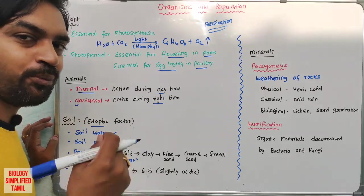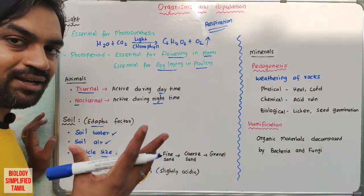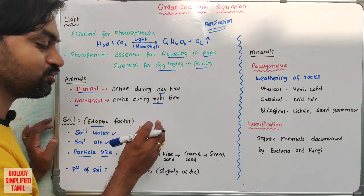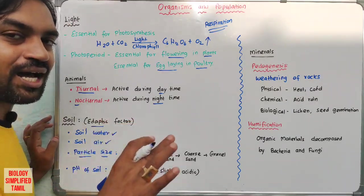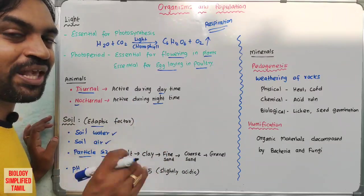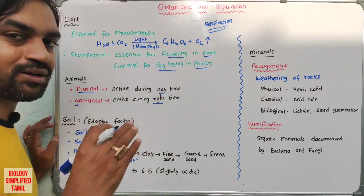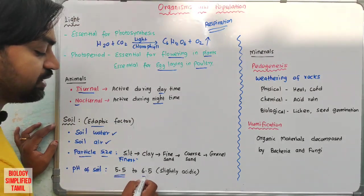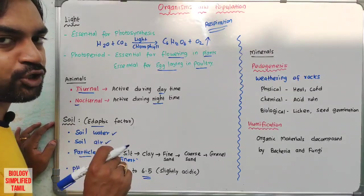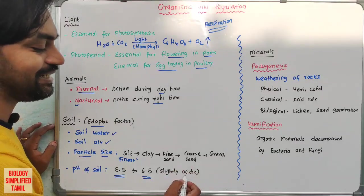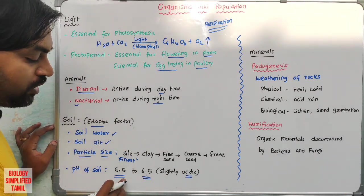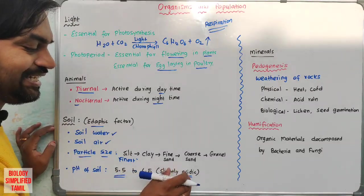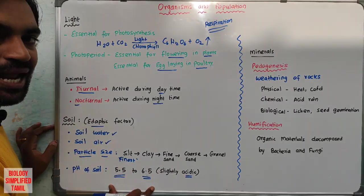Good soil supports plant growth. Silt soil, sand soil, and clay soil differ in properties. Soil pH is also important — slightly acidic soil around pH 5.5 to 6.5, which is below 7 but nearly neutral, is ideal. Plants grow well in slightly acidic soil conditions.